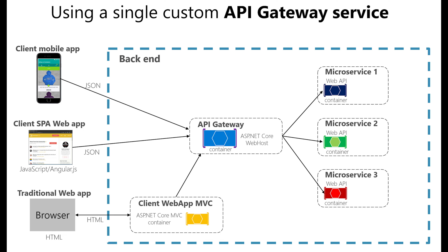APIs are part of an application that communicates with other applications. So APIs can be used to enable microservices.